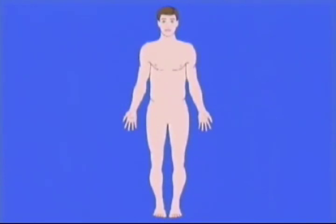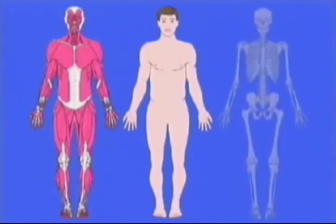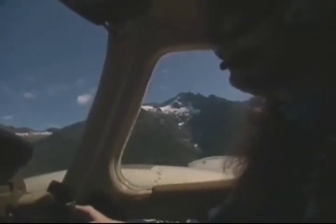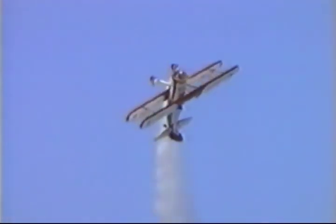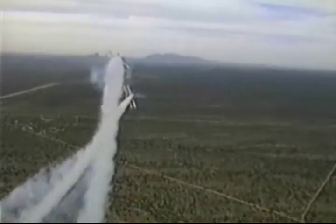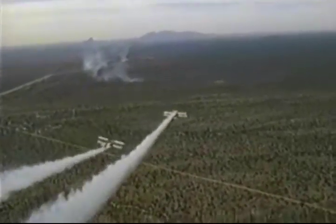Another sensory input that plays a role in maintaining spatial orientation comes from the proprioceptors located in the skin, muscles, tendons, and joints. Proprioceptors provide information about body position and movements. By sensing points of physical contact between body parts and the surrounding environment, they make it possible to know your relative posture — providing the 'seat of the pants' sense often referred to in flying. However, they alone will not let you differentiate between flying straight and level and performing a coordinated turn.